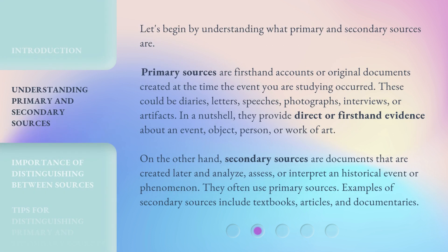Let's begin by understanding what primary and secondary sources are. Primary sources are first-hand accounts or original documents created at the time the event you are studying occurred. These could be diaries, letters, speeches, photographs, interviews, or artifacts. In a nutshell, they provide direct or first-hand evidence about an event, object, person, or work of art.